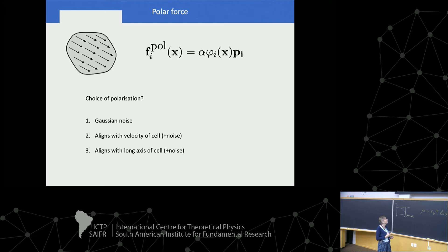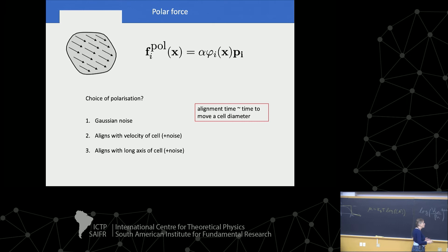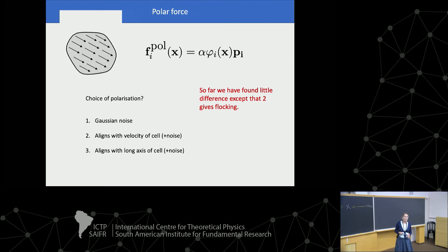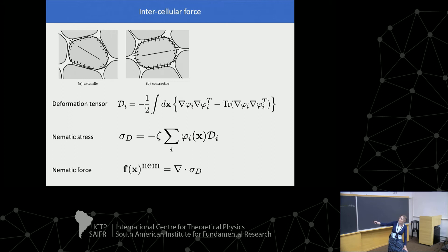What we found is that it really doesn't make any difference how we define the polarity, except that we see flocking when we align the forces on the cell with their velocity — those familiar with the Vicsek model of active matter might have expected that. The intercellular forces: if the cell is elongated, the surrounding cells tend to increase that elongation, making it longer. This is a sensible way of having cells pull on each other, and a lot of equations later it comes out exactly the same as the active term in the continuum equations of motion.